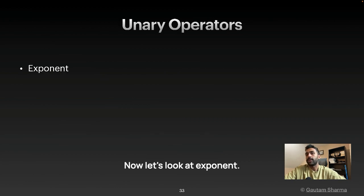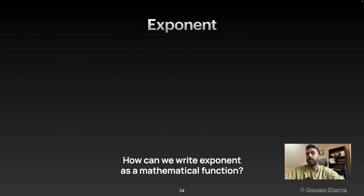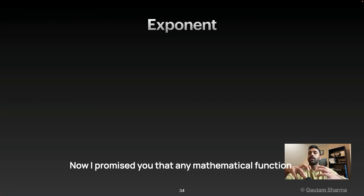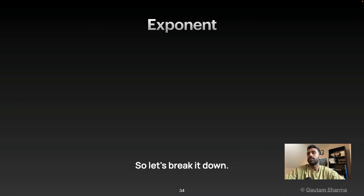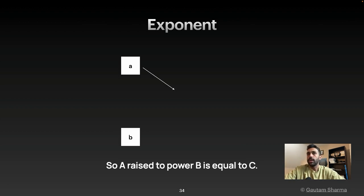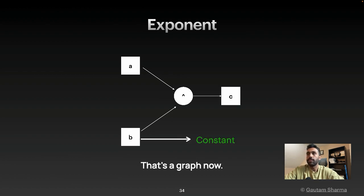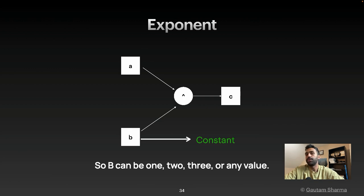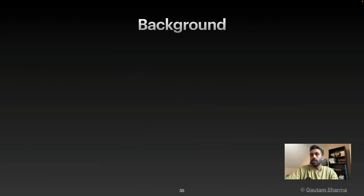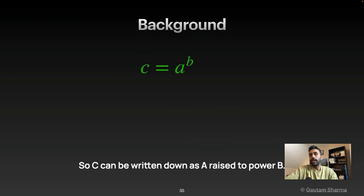Now let's look at exponent. How can we write exponent as a mathematical function? Now I promised you that any mathematical function can be broken down into four primitive operations. So let's break it down. So A raised to power B is equal to C. That's a graph now. And here B can be a constant, or it can be any variable also. But let's assume it's a constant for now. So B can be 1, 2, 3, or any value.